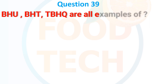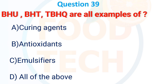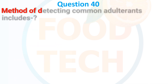BHT and BHA are examples of: A. Curing agents, B. Antioxidants, C. Emulsifiers, D. All of the options. The answer is B. Antioxidants.